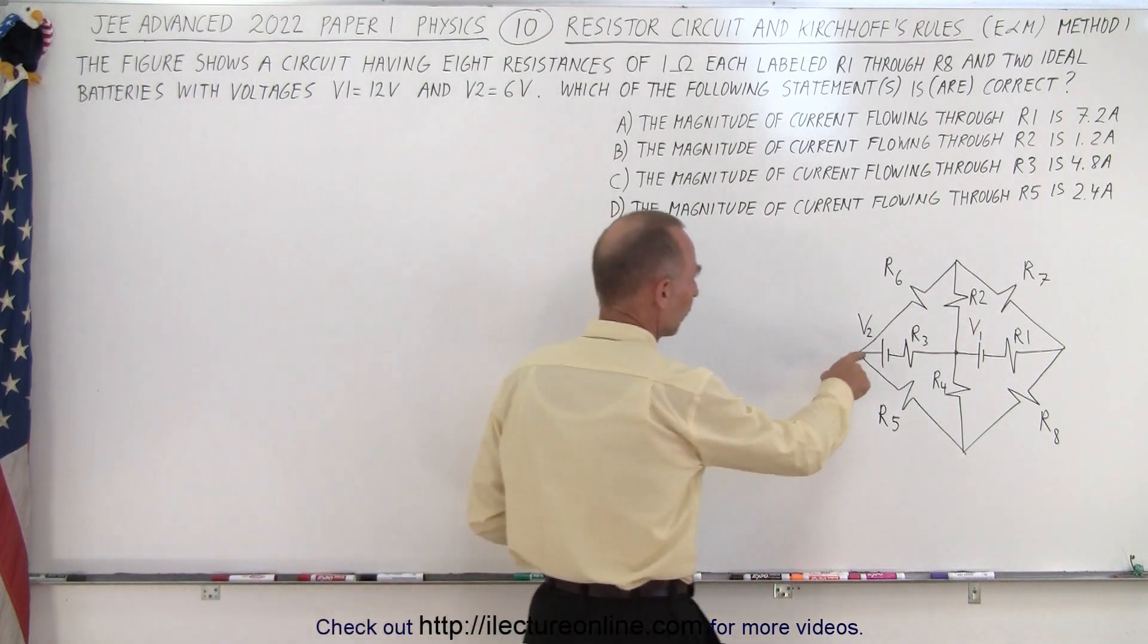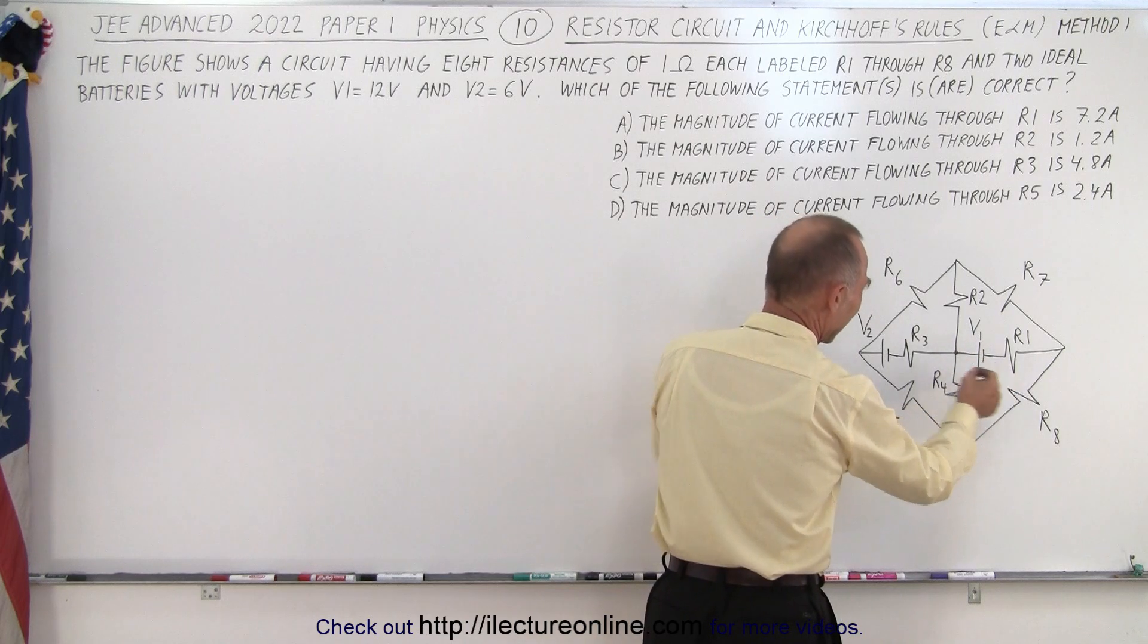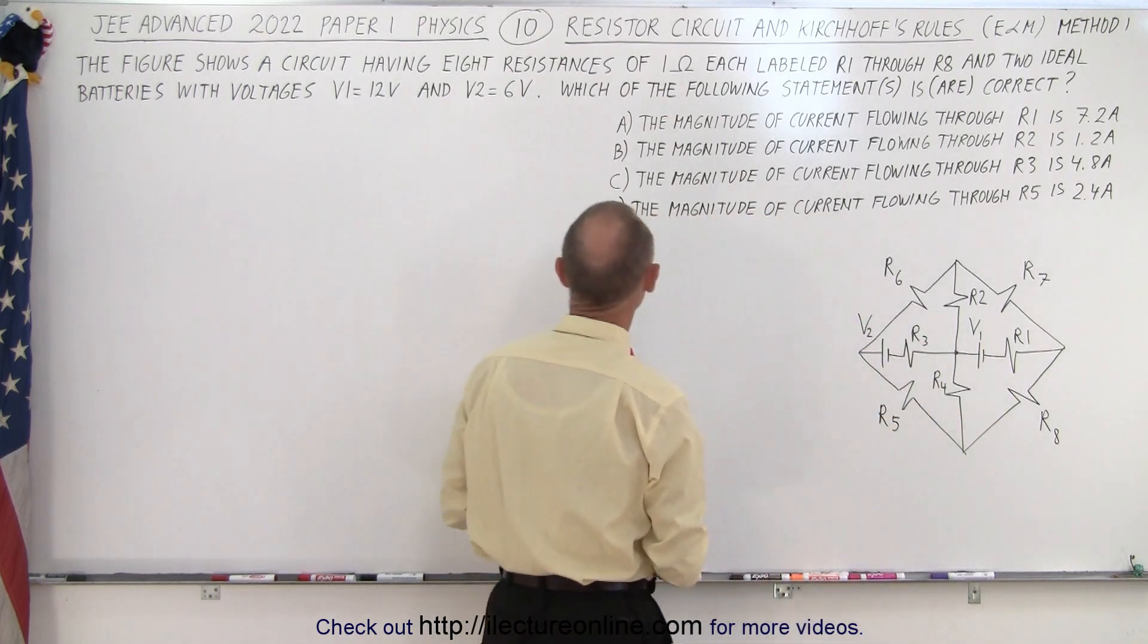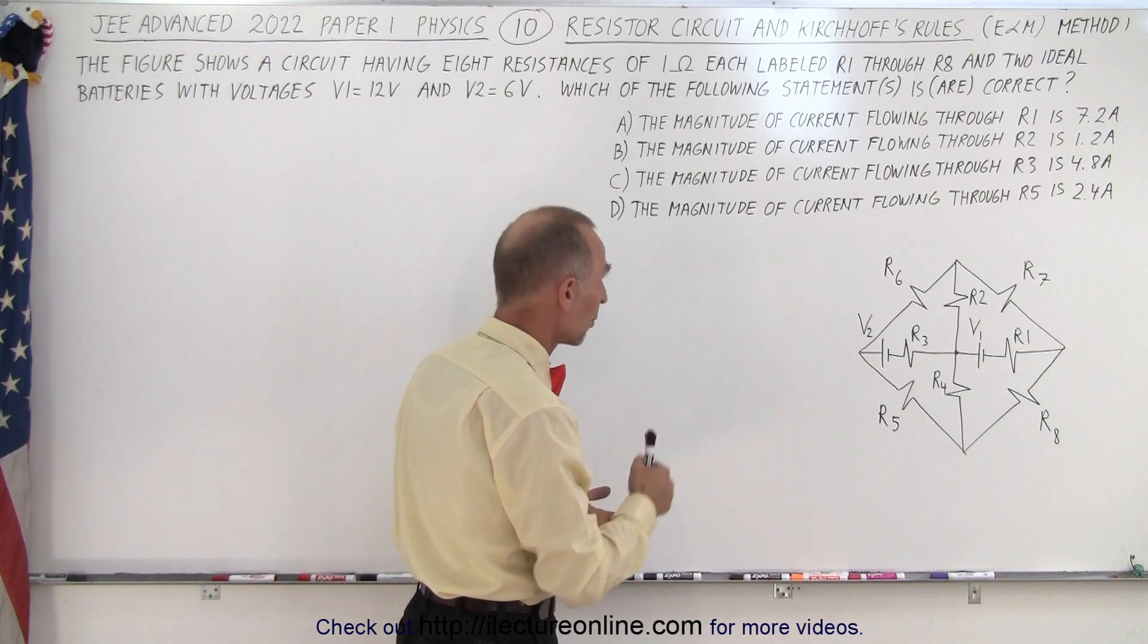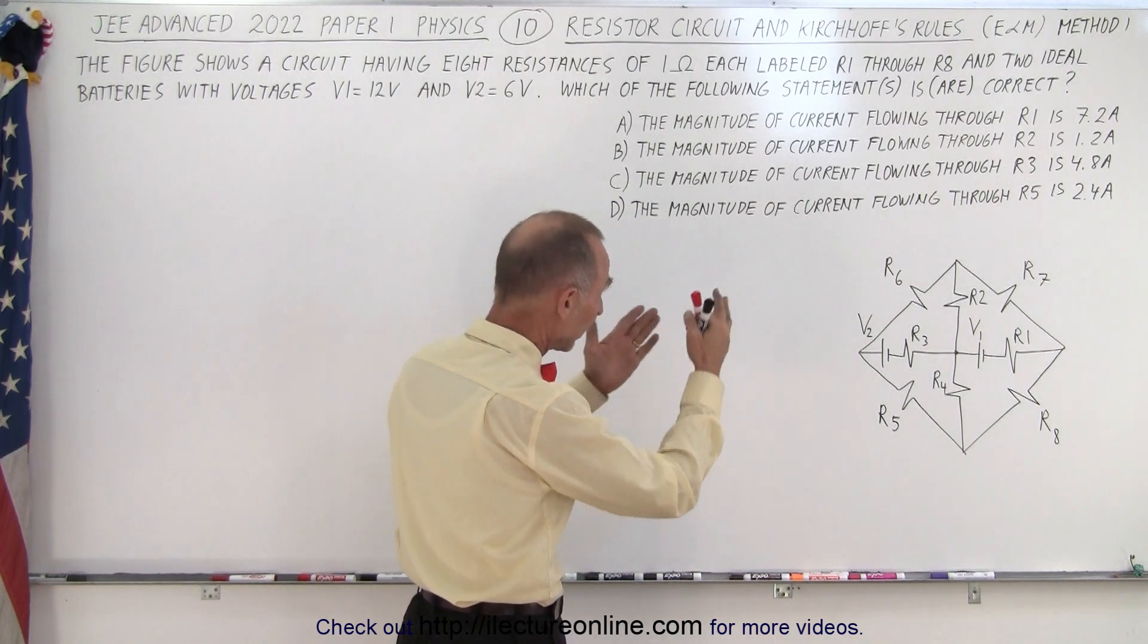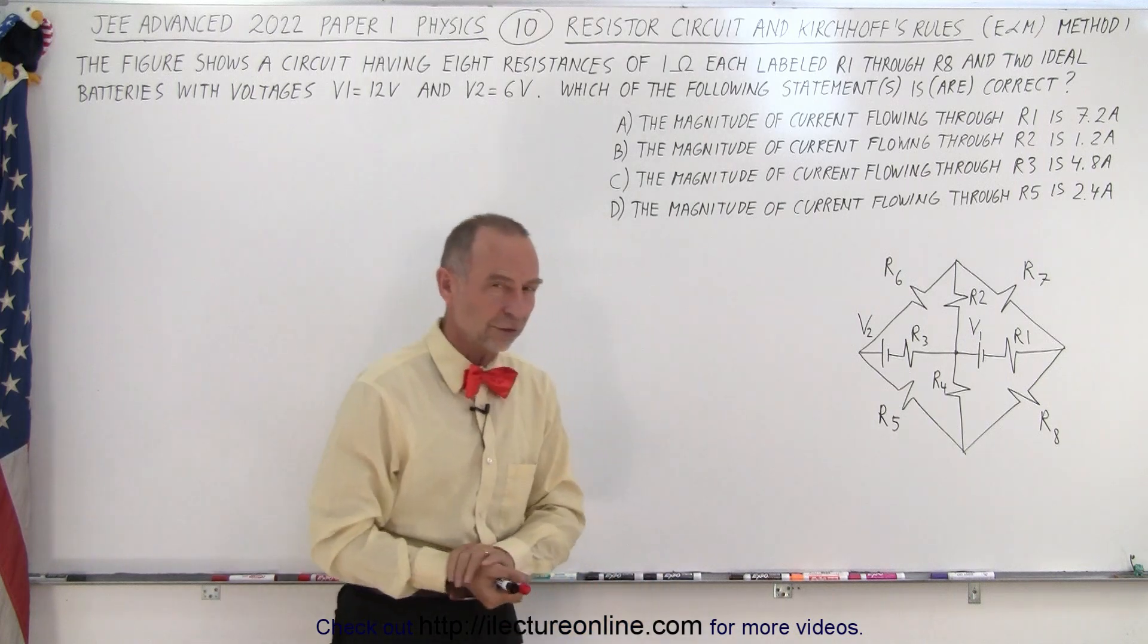Notice they have V2 first and V1 next so you make sure you don't get those mixed up. And which of the following statements is or are correct? So we have four statements, four currents related to four of the resistors.